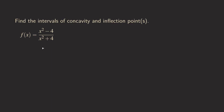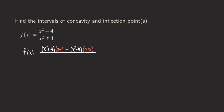To find intervals of concavity, we should first find the first and the second derivatives. For the first derivative, f prime, we are going to use the quotient rule. We start by writing the fraction line, then copy down the bottom function x-squared plus 4, times the derivative of the top function, which is 2x. Then minus, copy down the top function x-squared minus 4, times the derivative of the bottom function, which is also 2x. Then we square the denominator.